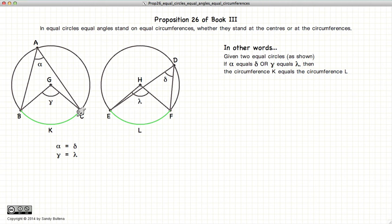In other words, BKC will be equal to ELF. Or, if the angle from the circumference, in this case Alpha, is equal to the angle Delta, then we also have that BKC is equal to ELF.